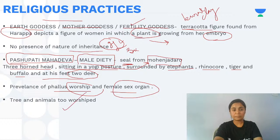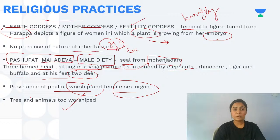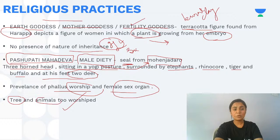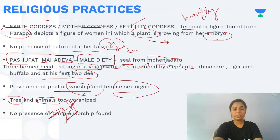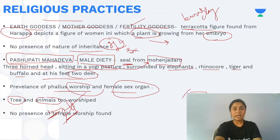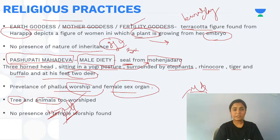Trees and animals were given great importance. The mother goddess's embryo had a peepal tree growing from it — indicating tree worship. Among animals, many unicorn seals and bull figures have been found. Most importantly, there was no presence of temples — no idol worship or temple worship was practiced. Instead, Indus people believed in tree worship, animal worship, worship of Pashupati Mahadev, and the earth goddess.